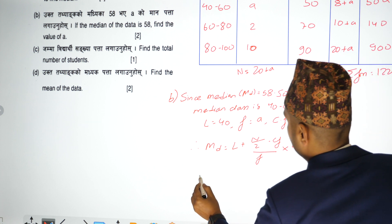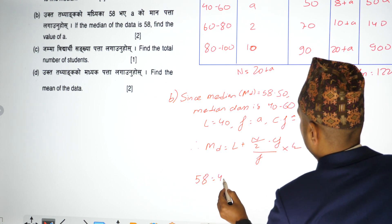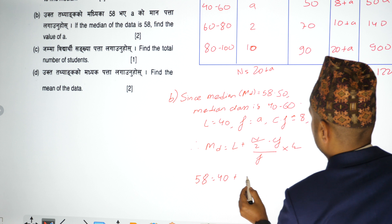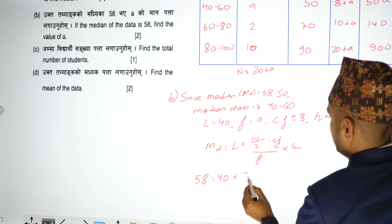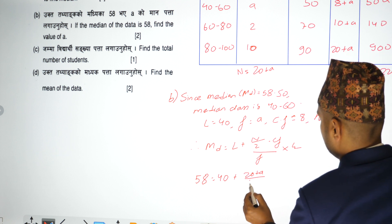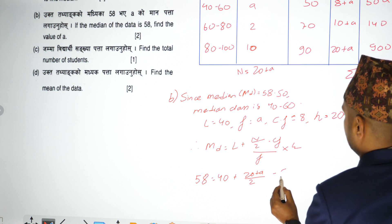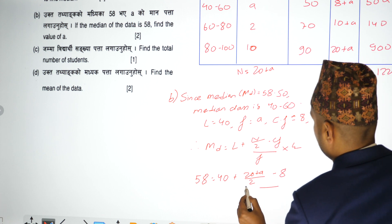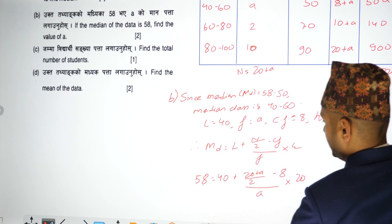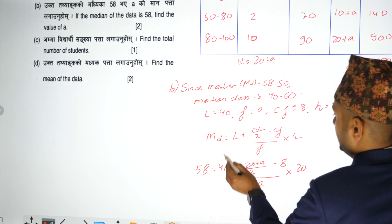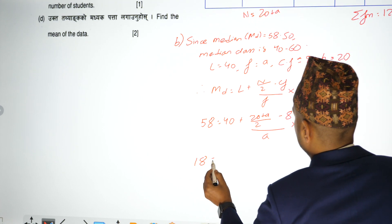Median is 58, equals to L value 40, plus N by 2 which is 20, plus A by 2, minus CF which is 8, frequency is 8, into 20. So 58 minus 14 gives 18.